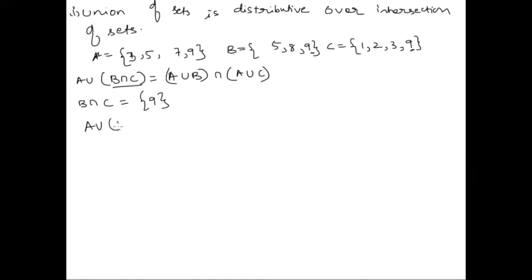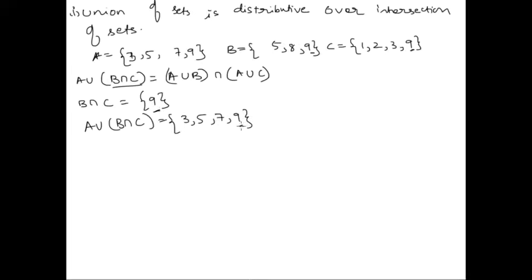What is A union (B intersection C)? We list out A first: {3, 5, 7, 9}, and then B intersection C = {9}, but since 9 is already in A, we account for it only once. So A union (B intersection C) = {3, 5, 7, 9}. This is the LHS. Now let's do the RHS in a different color.